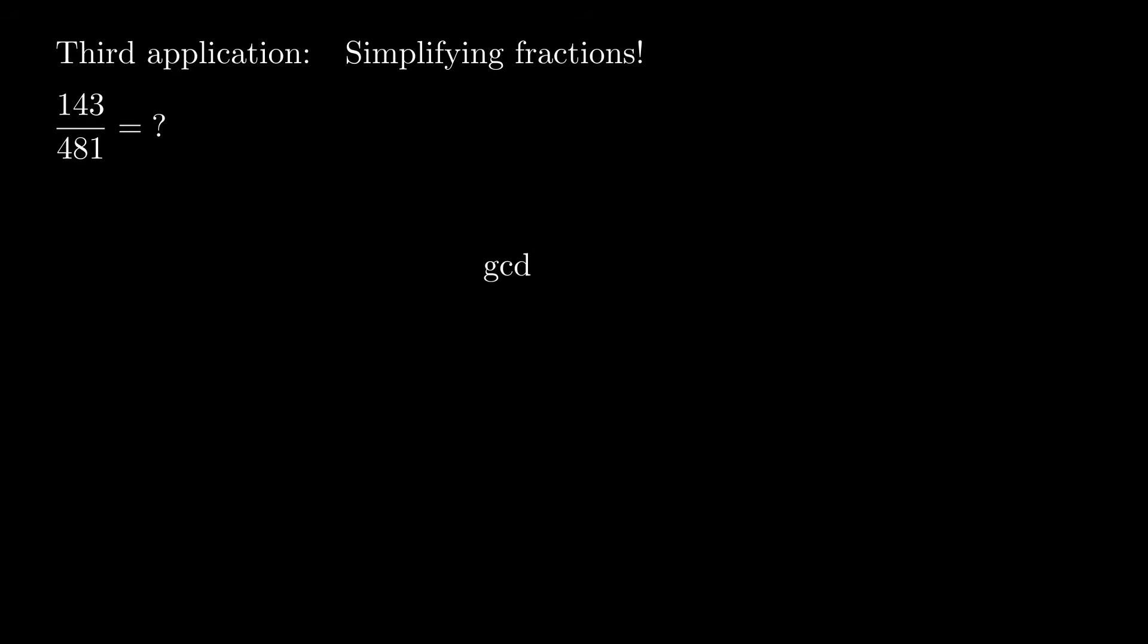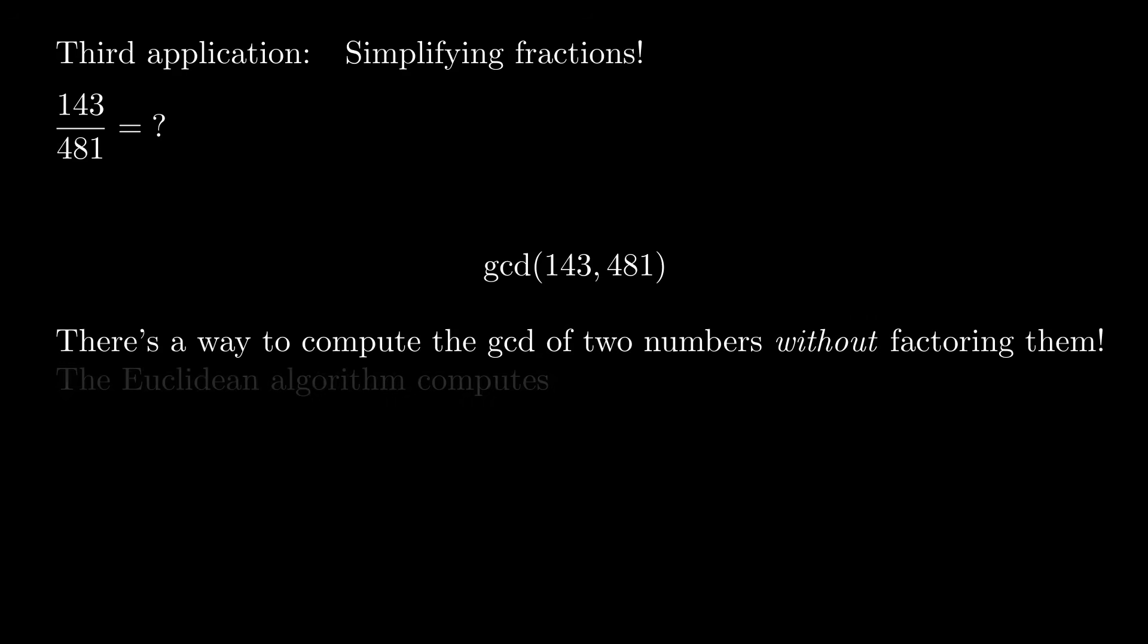Amazingly, we can compute the greatest common divisor of the numerator and denominator without knowing any of their factors. Let me say that again, because it's the most important fact in elementary number theory. There's a way to compute the GCD of two numbers without factoring them. And that's what the Euclidean algorithm computes, the GCD.